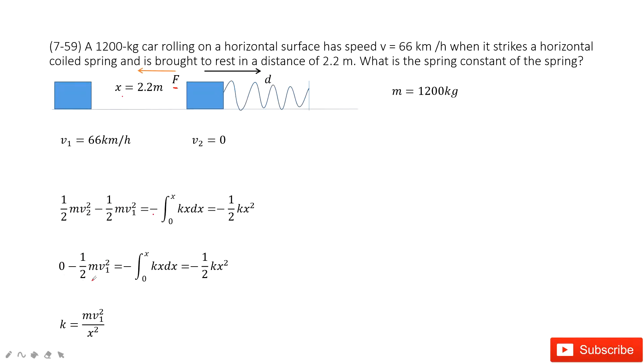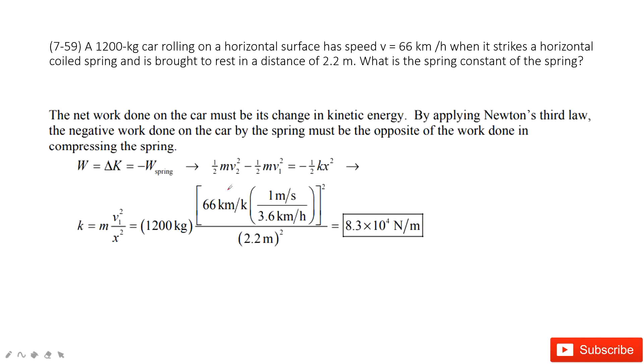We find the equation: zero minus one-half mv1 squared equals negative one-half kx squared. Then we can find k very easily. Input the known quantities and get the final answer.